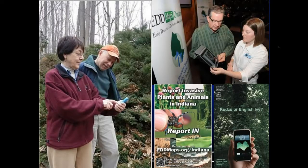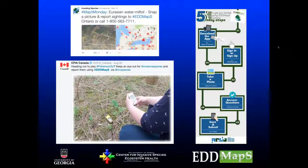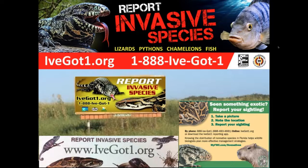Thinking about outreach, the best way to do it is to get out in the field and show somebody how to use it. Ontario has done some interesting things with social media, doing Map It Mondays where you show a picture and try to fill in the distribution. But I still go back to some of the best outreach being what's happened in Florida with IveGotOne.org and tying it to the phone number — that really makes an impact.